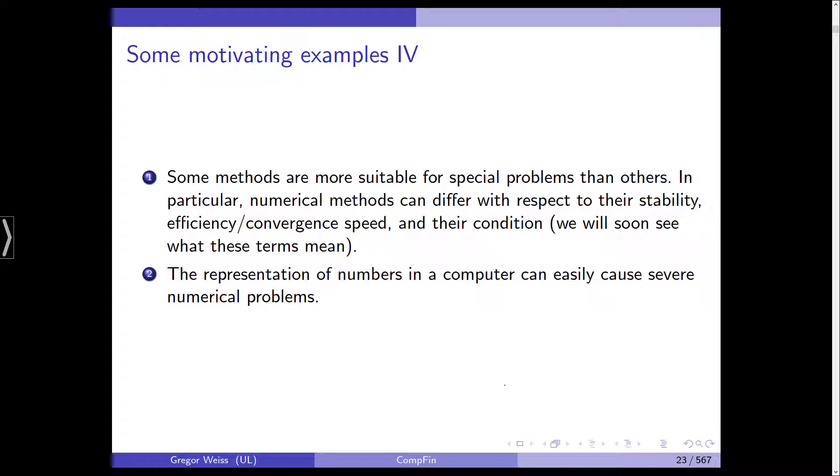But basically, stability means you put in a certain input, and you always get the same output. Convergence means that if you use several iterations to arrive at a better and better solution, your algorithm should converge quickly. You shouldn't use too many iterations.